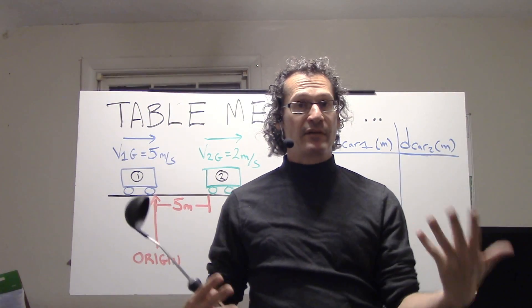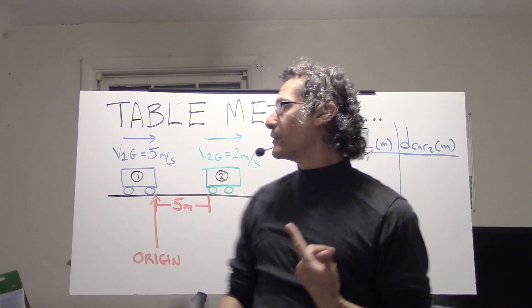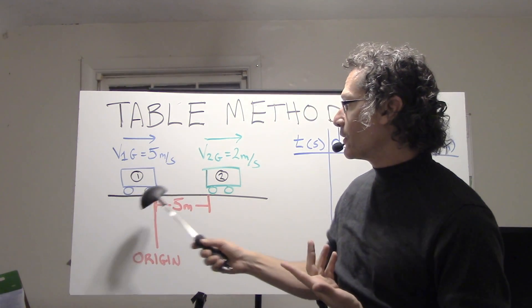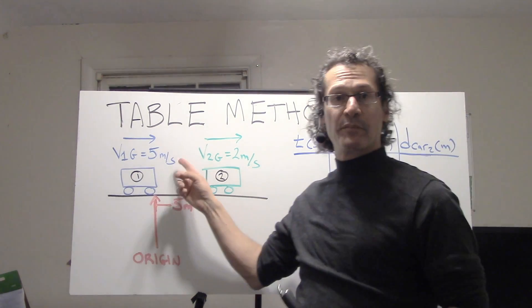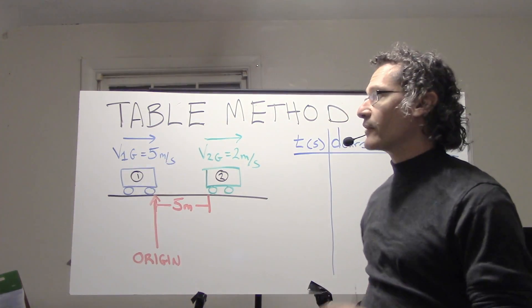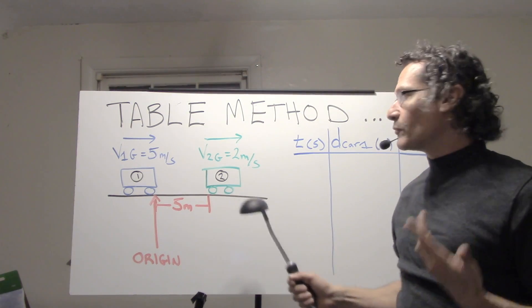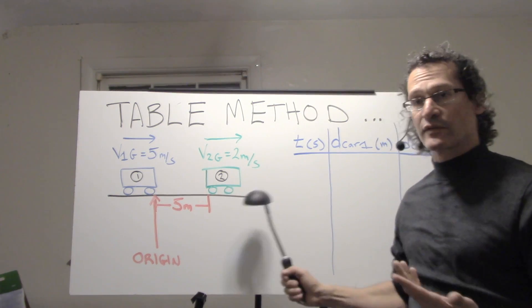Here it is, method number one: the Table Method. Once again, here's our situation. Car one is moving at five meters per second relative to the ground, and car two is moving at two meters per second relative to the ground.